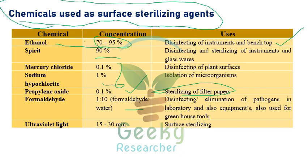Formaldehyde at 1:10 concentration (formaldehyde and water) is recommended for elimination of pathogens in laboratory equipment and greenhouse tools. Ultraviolet light in the laminar airflow chamber is used for surface sterilization — switched on for a minimum of 15 to 20 minutes before working to kill any microbes inside the chamber.